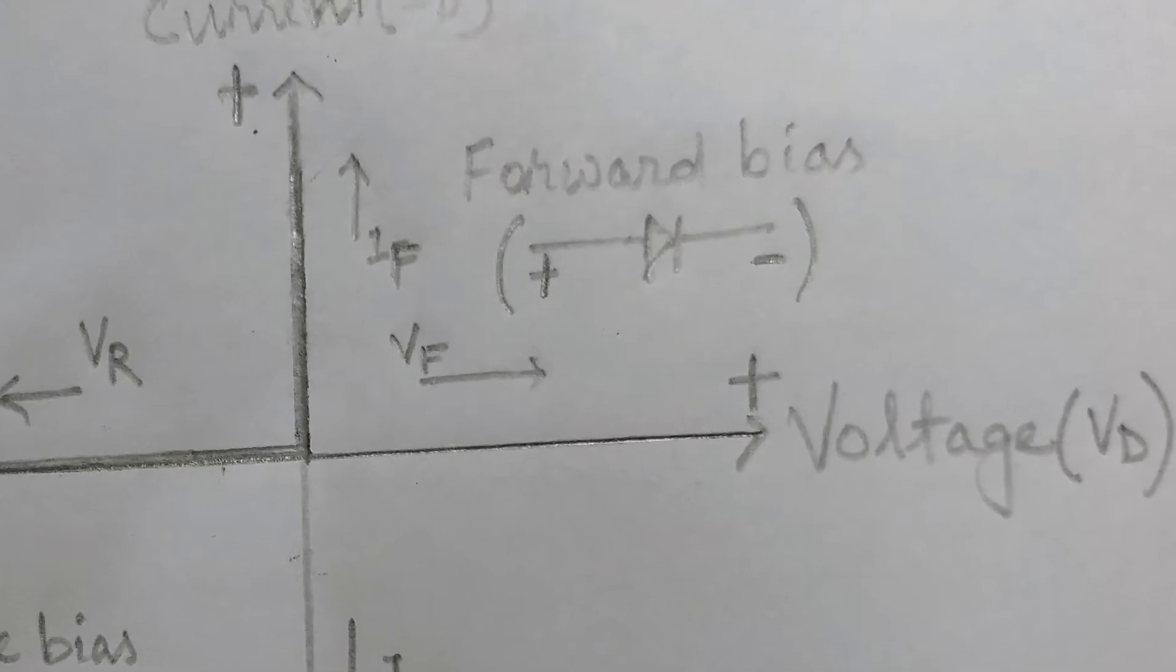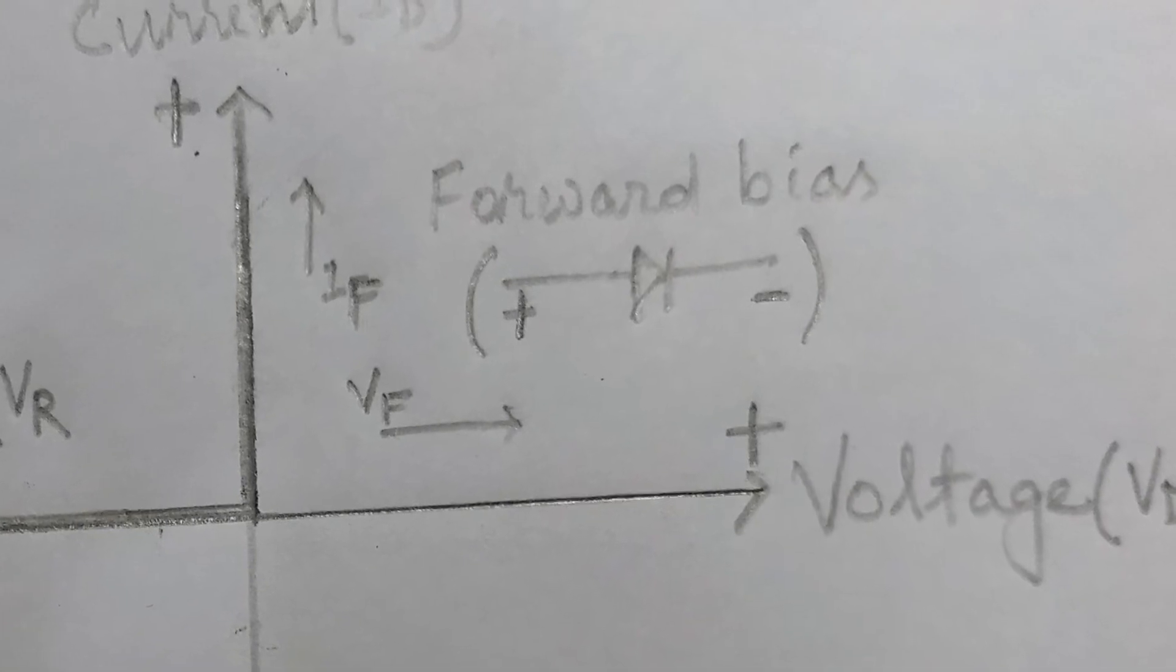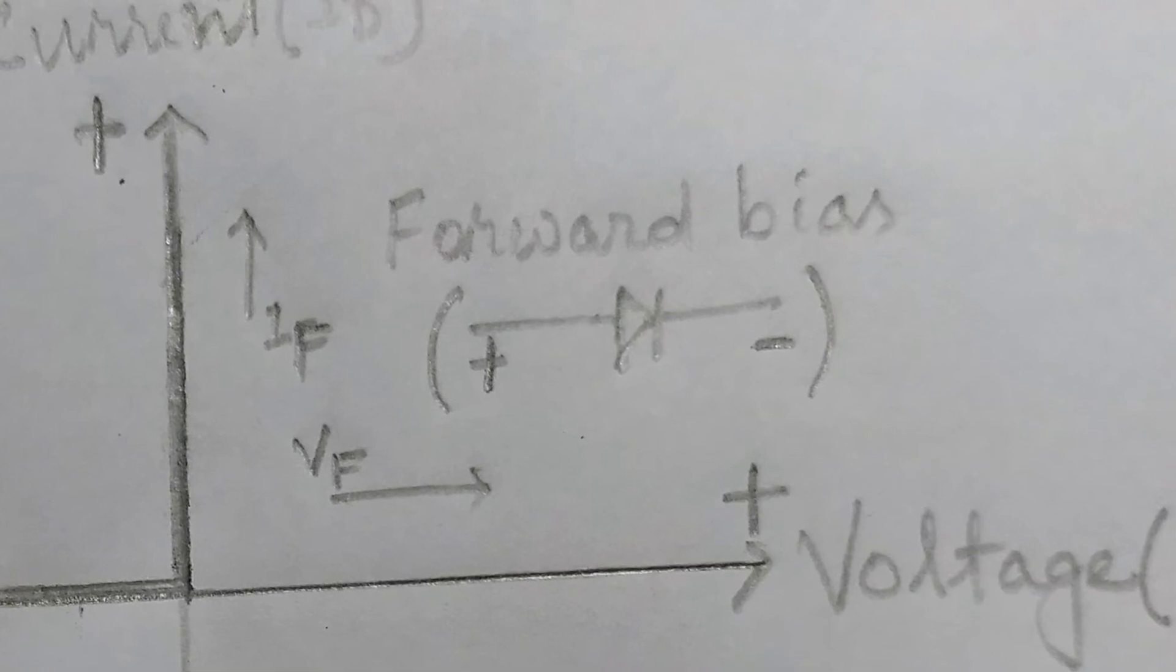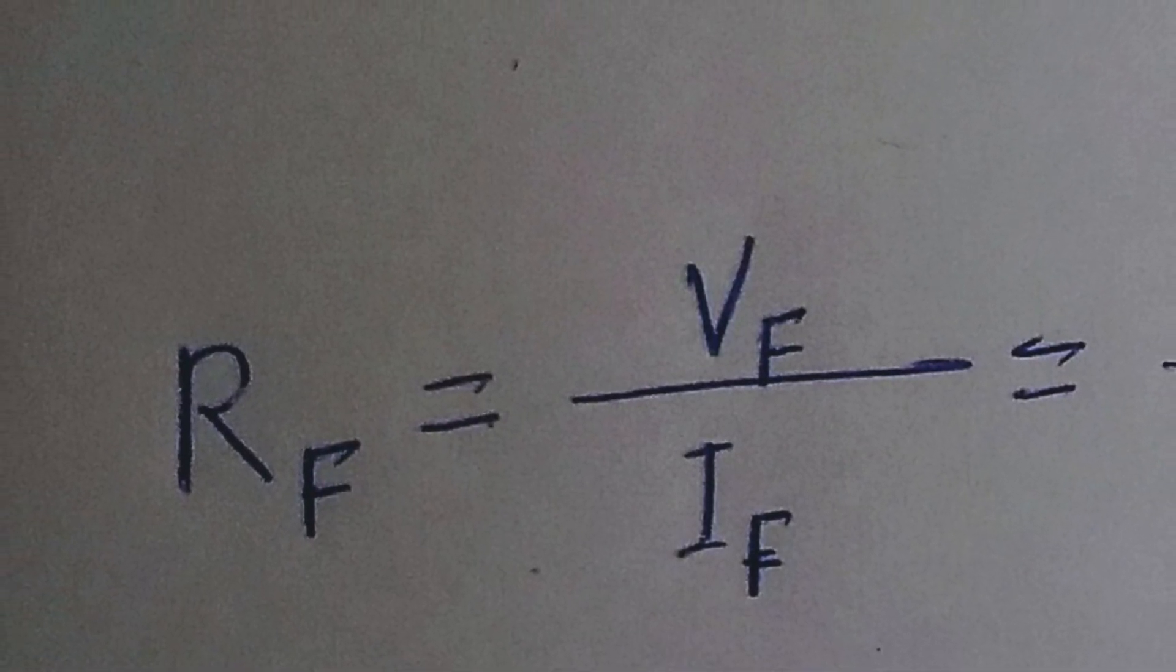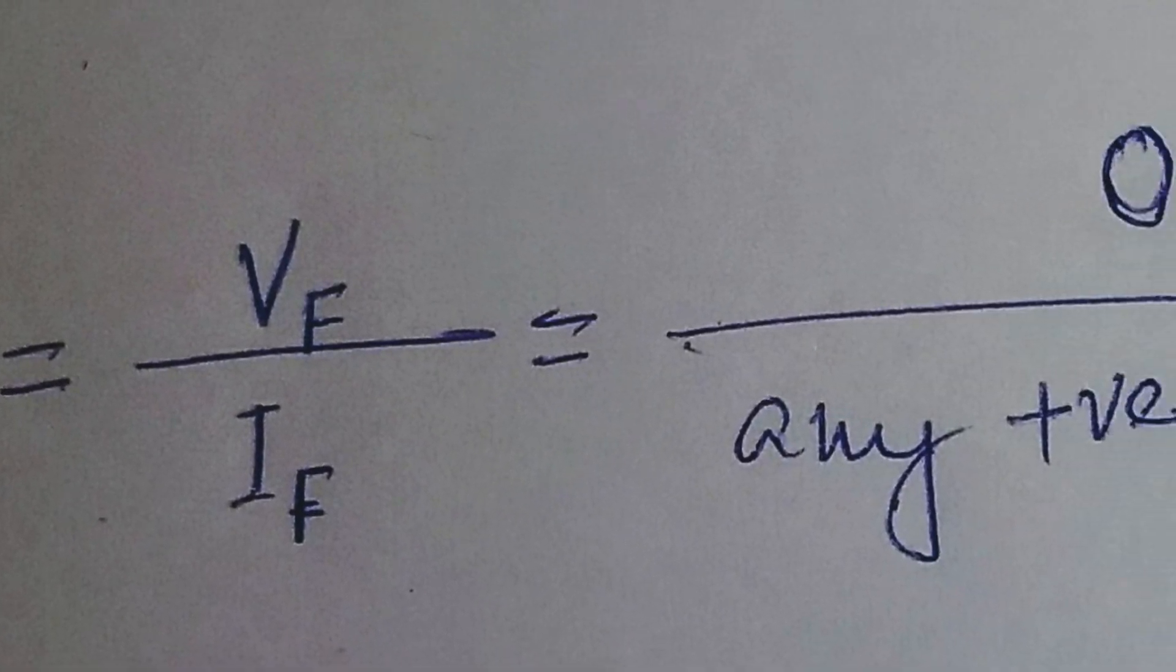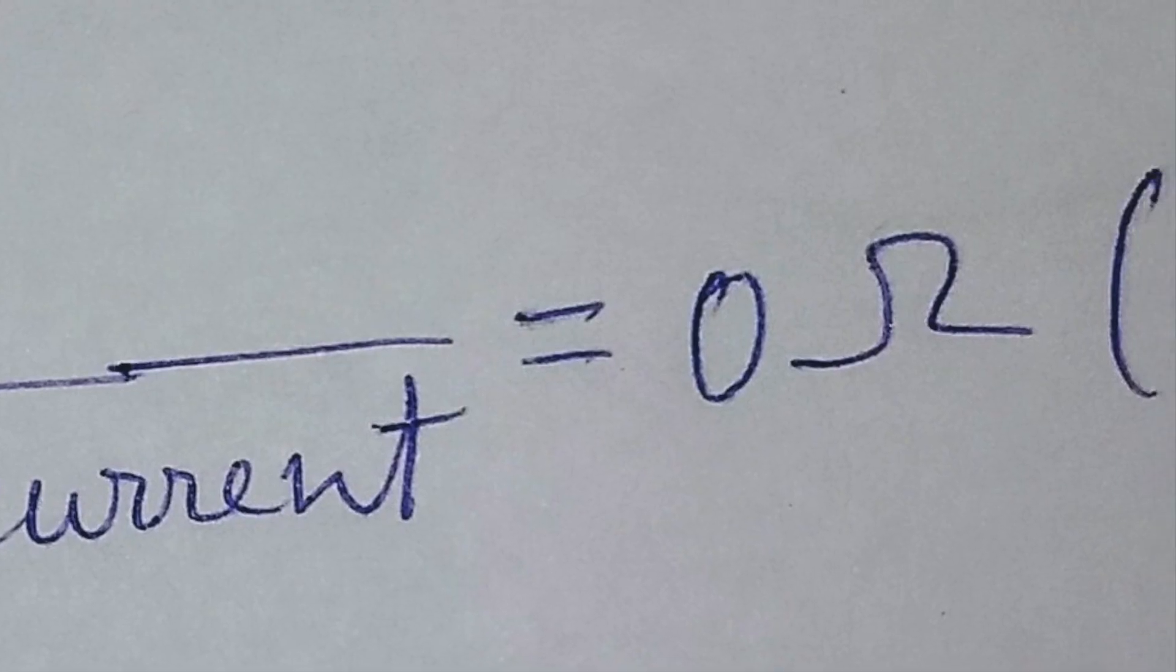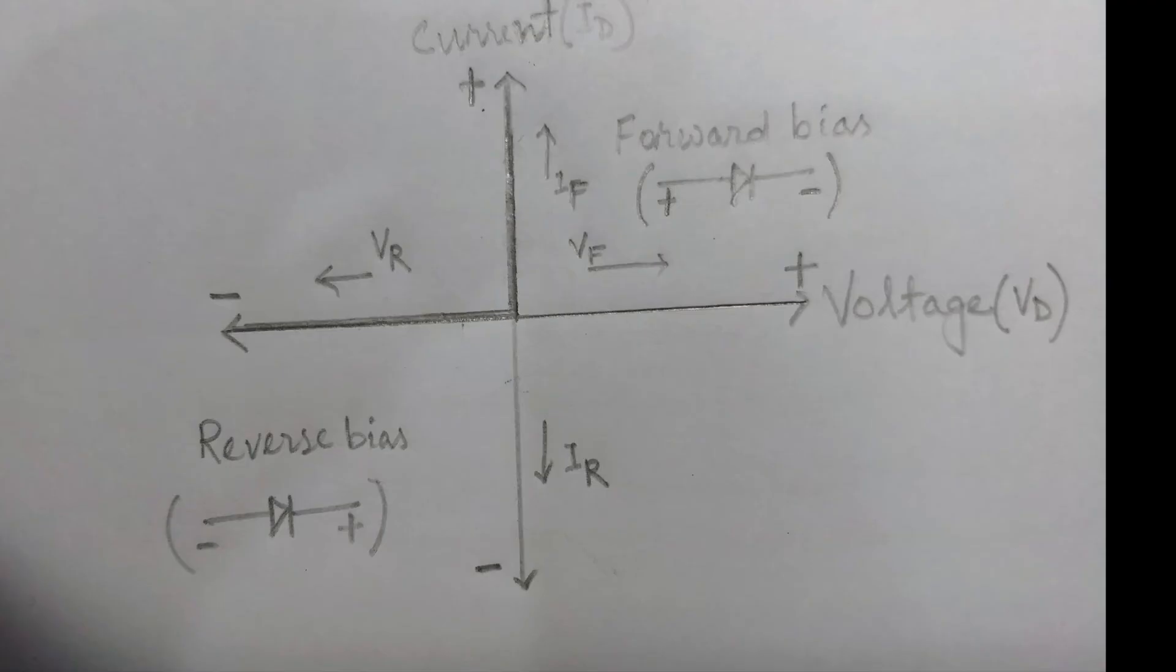Therefore, for a forward voltage VF and forward current IF, the forward resistance for an ideal diode is given by RF equal to VF divided by IF, which is equal to 0V divided by any positive value of current, which is equal to 0Ω. That is, acts as a short circuit.